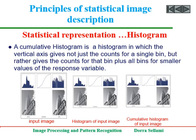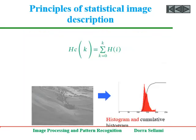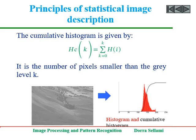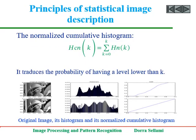A cumulative histogram is a histogram in which the vertical axis gives not just the counts for a single bin, but rather the counts for that bin plus all bins of smaller values of the response variable. The cumulative histogram, for a variable k, corresponds to the number of pixels smaller than grey level k in the image. The normalized cumulative histogram, for a variable k, corresponds to the probability of having a level lower than k.